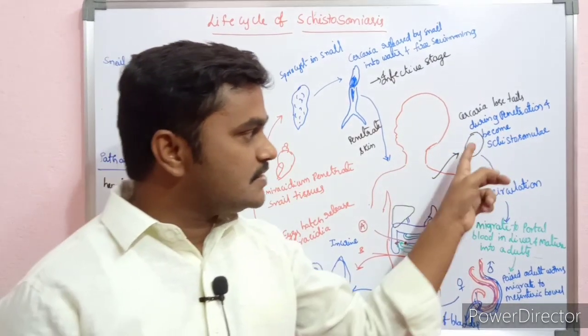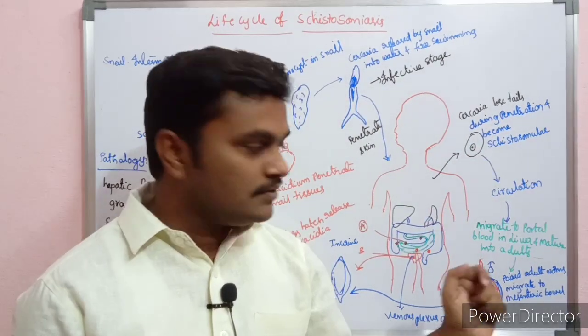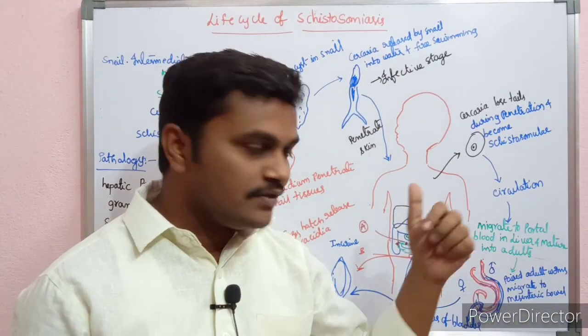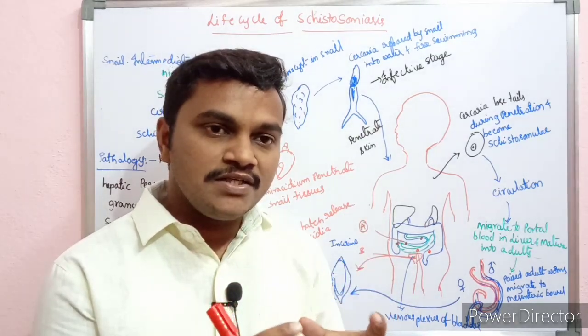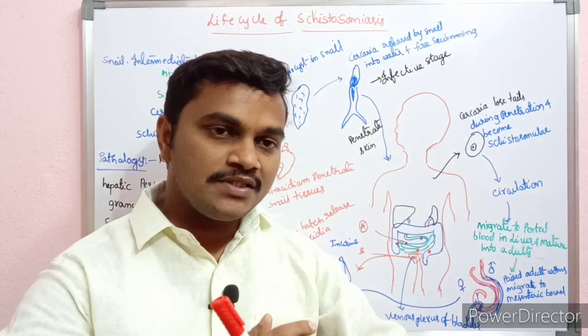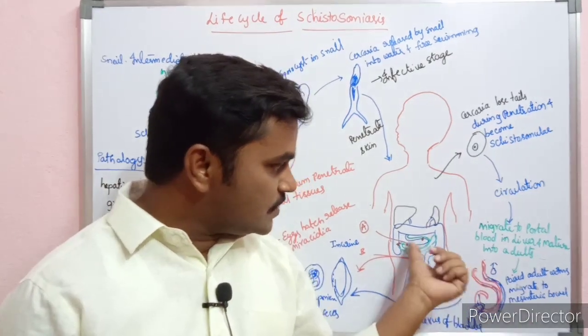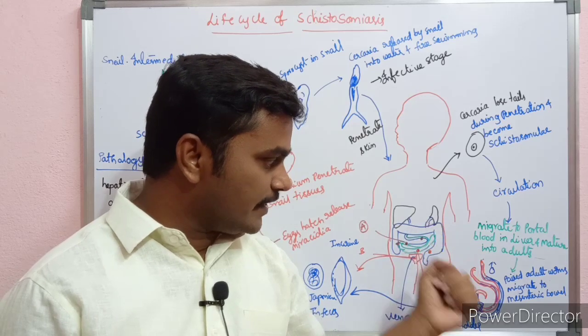The schistosomulae enter into circulation and migrate to the portal circulation of the liver, where they mature into adults.